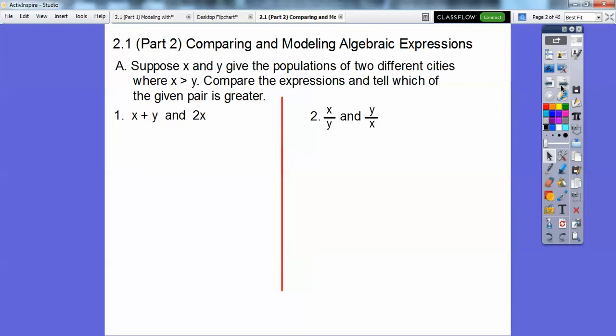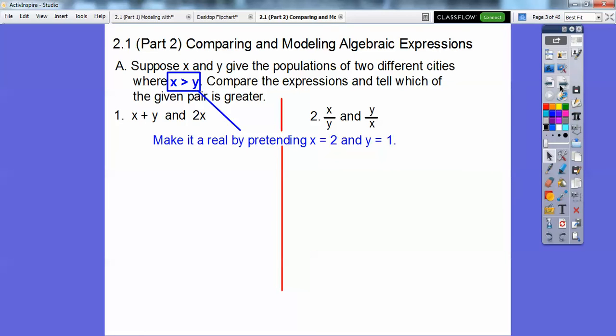They asked us to split this up into two days. So suppose X and Y give the populations of two different cities where X is greater than Y. Compare the expressions and tell which of the given pairs is greater. When you see these like this, SAT test makers love these kind of questions. They make them vague. Let's make it a real problem by assigning X and Y some random numbers. So I'm just going to pretend like they're two and one. Those are nice small numbers to deal with. And since two is greater than one, it will satisfy this inequality.